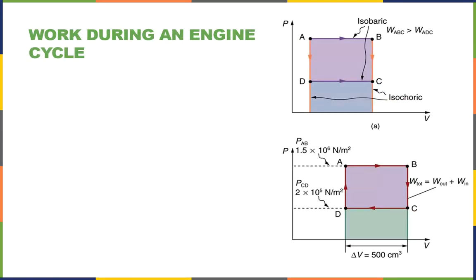We analyze heat engines using PV diagrams. Work done equals P·ΔV, which is the area under a curve. The simplest cycle has an isobaric process where volume increases, then an isochoric process where pressure drops, then an isobaric contraction, then another isochoric pressurization. Because the work is the area under the curve, the net work for a complete cycle is the area enclosed inside the cycle.